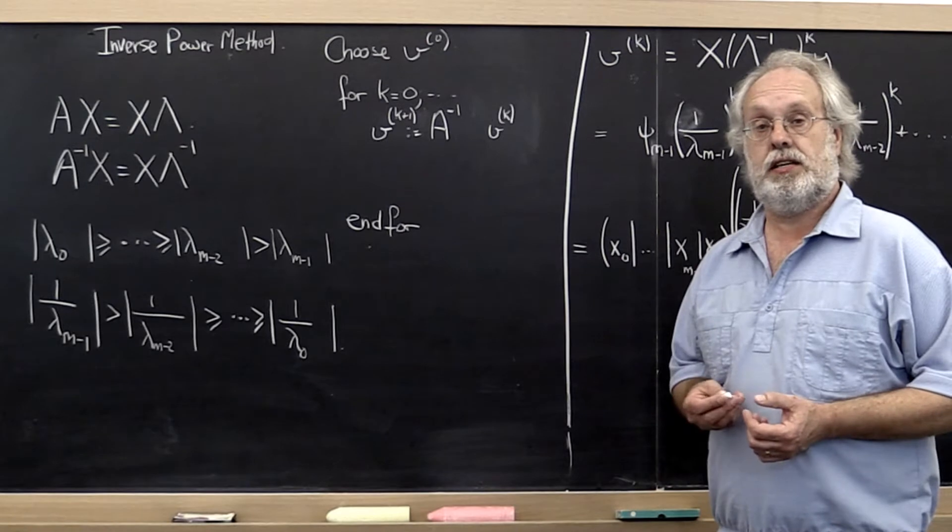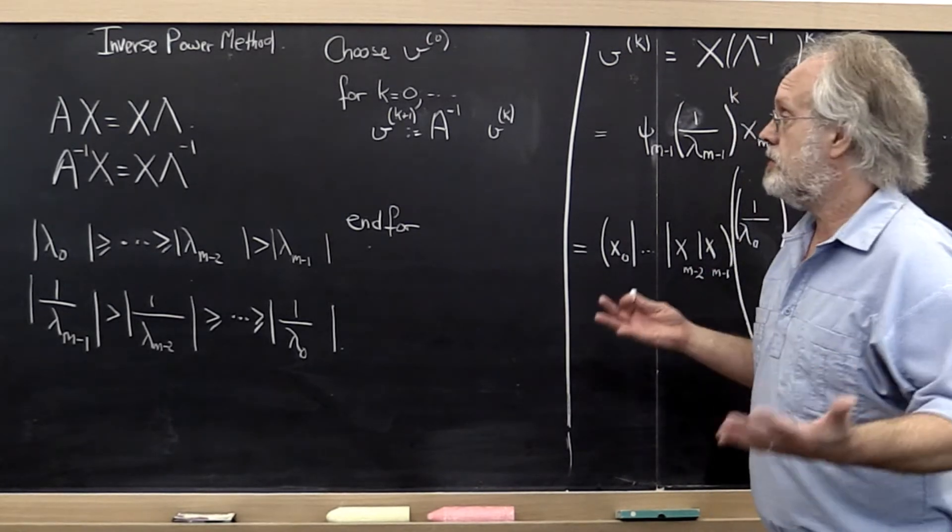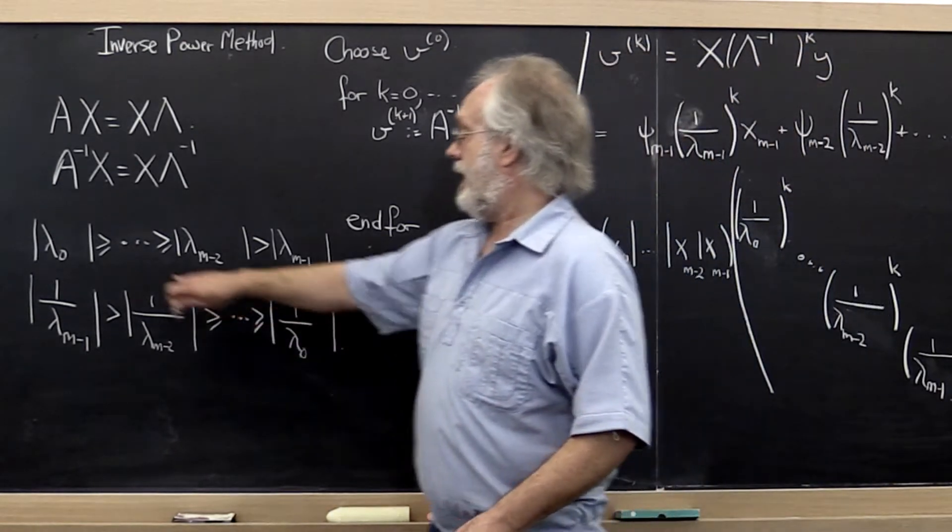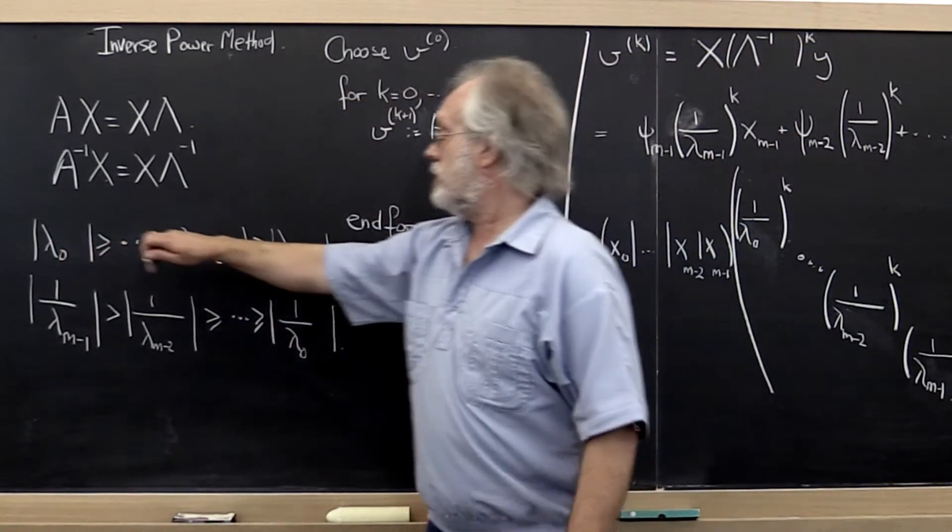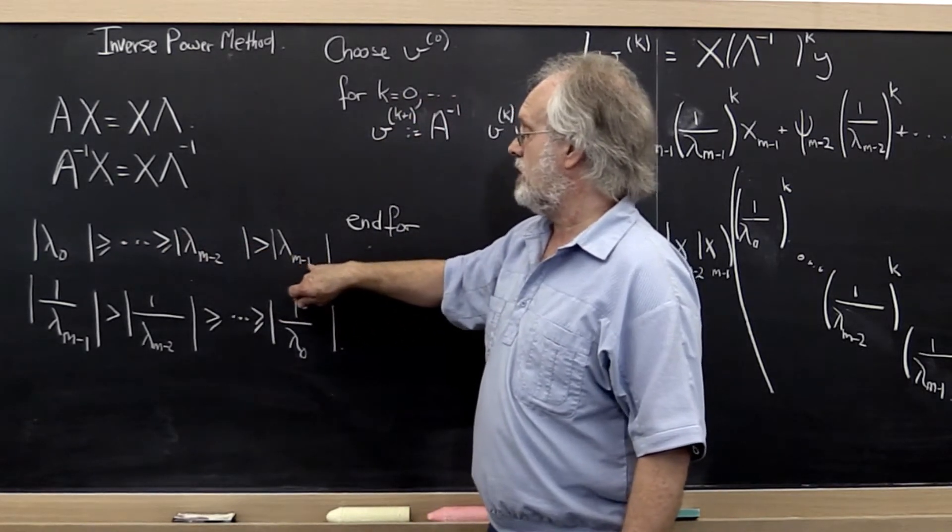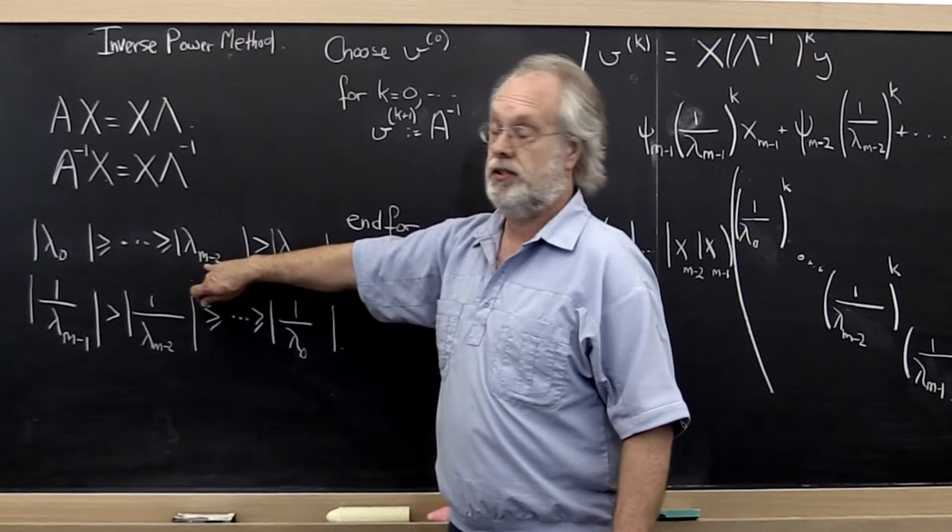Let's translate some of these insights into what we call the inverse power method. Here's the idea: if we have eigenvalues ordered from largest to smallest, and this time we say that the smallest one is strictly smaller than the next smallest one in magnitude, then...